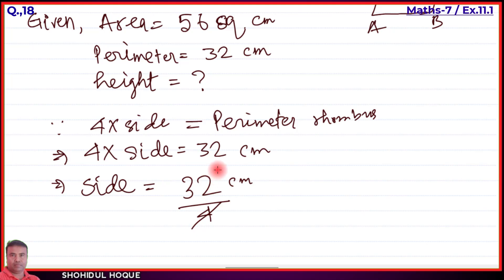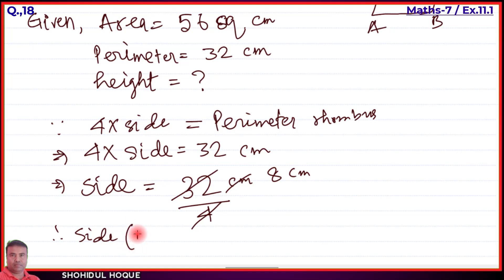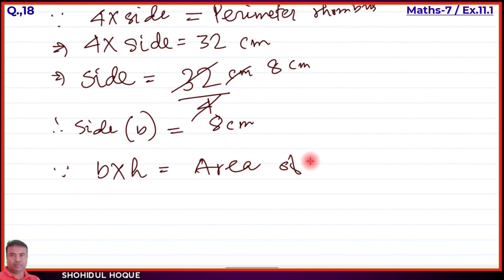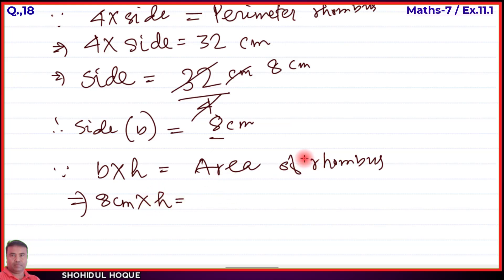Therefore side equals 8 centimeters. For the rhombus, the side can be called the base, so base = 8 centimeters. Now we can find the height using the area formula. Applying the area formula: base × height = Area of rhombus. Base is 8 centimeters and height is unknown. Area is given as 56 square centimeters.